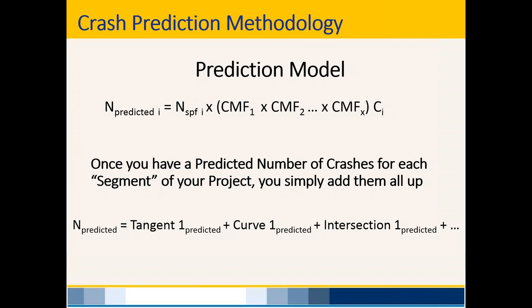Intersections along a corridor use a different SPF model than segments do. The Highway Safety Manual has SPFs specifically for intersections along various roadway types. For rural two-lane roadways in Chapter 10, the SPFs for intersections are also within Chapter 10 — they've packaged it neatly so you're not flipping through the entire book.